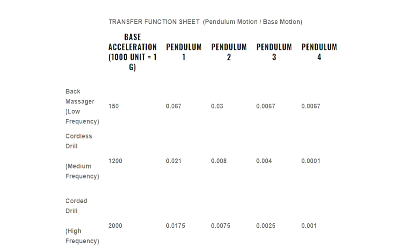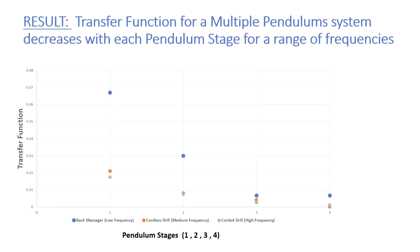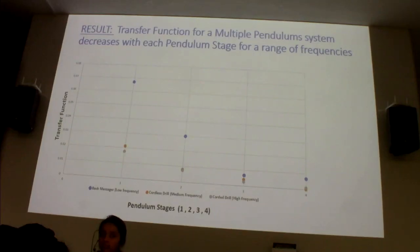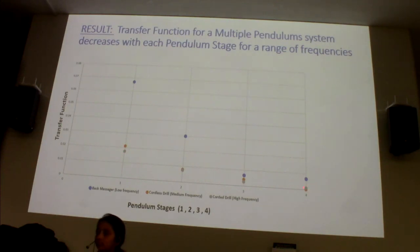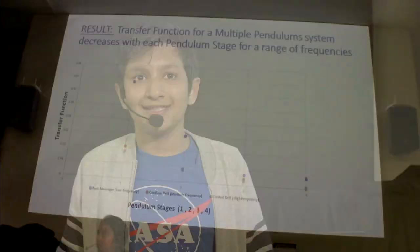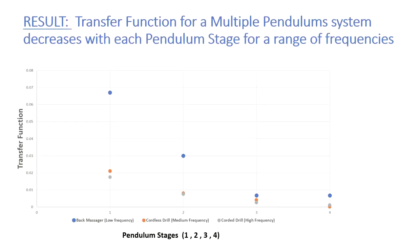To measure the change in vibration across the pendulum, we made a transfer function — basically how much the pendulum is moving divided by how much the top was moving. The blue dots show the transfer function for the back massager at low frequency. It doesn't cushion vibrations as efficiently as the orange cordless drill and the gray corded drill at higher frequencies. But eventually all of them reach a relatively low transfer function, meaning all three pendulum configurations worked efficiently.